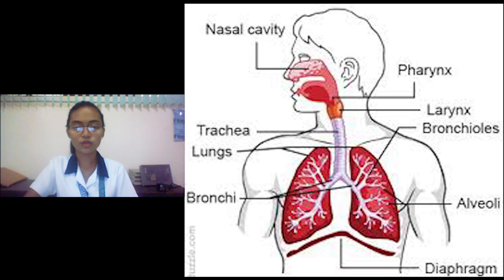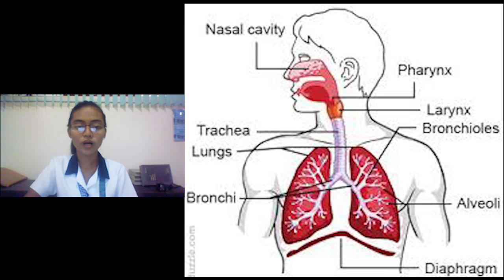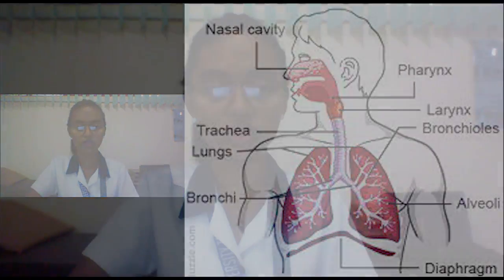The second major part of the respiratory system is the lungs. They act as the functional unit of the respiratory system by passing oxygen to the body and removing carbon dioxide. The third part is the muscles of respiration, including the diaphragm and intercostal muscles, which work together to act as a pump, pushing air into and out of the lungs during breathing.